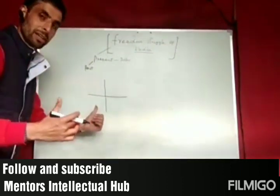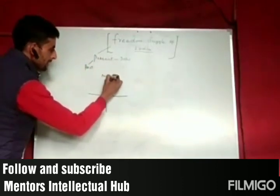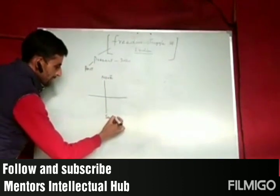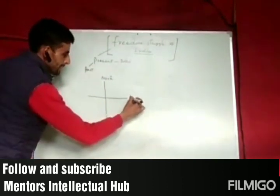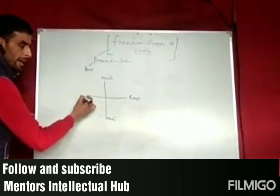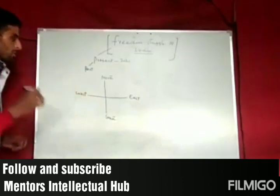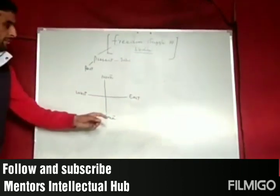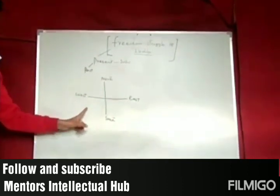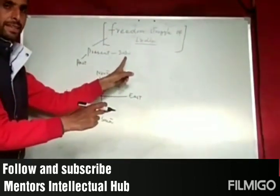On the map: at the top is North, at the bottom is South, on the right is East, and on the left is West. So in the graphical sketch you will have North, South, East, and West. We will start from the present — from 2020.